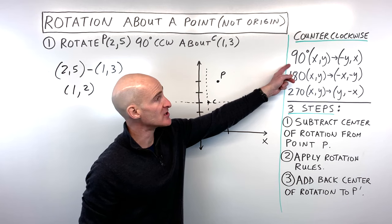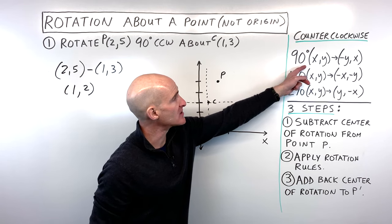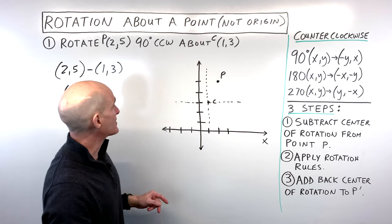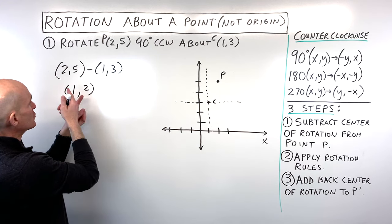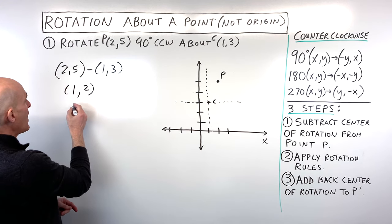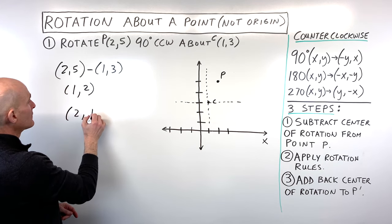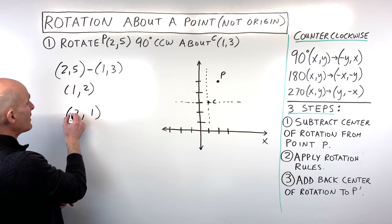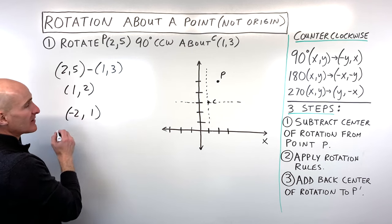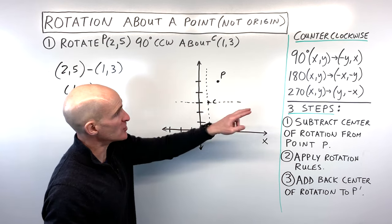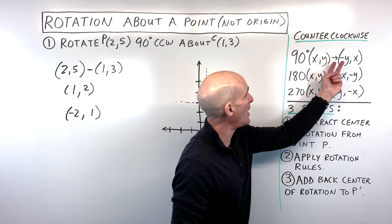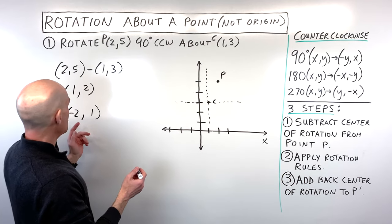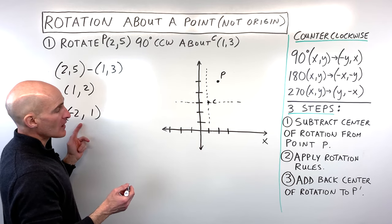Now we apply our rotation rules. For 90 degrees counterclockwise, (x, y) becomes (-y, x). The way I like to think about it: you switch the x and the y, then make the new x value the opposite sign. So we switch and get (1, 2) → (-2, 1).